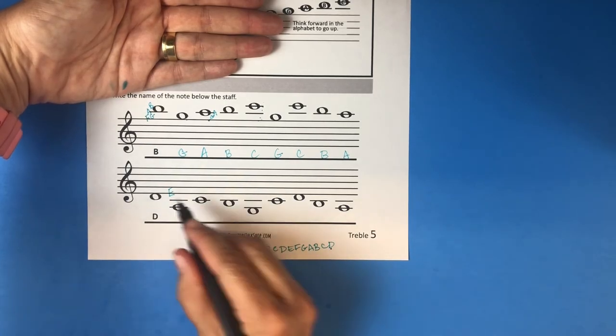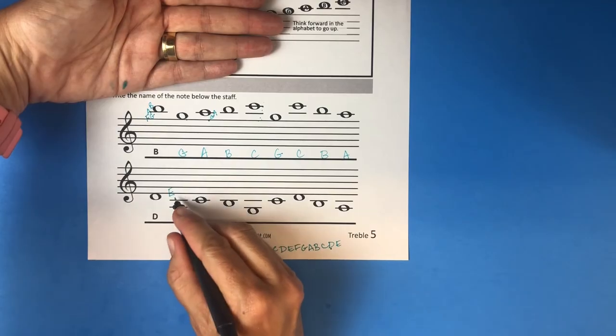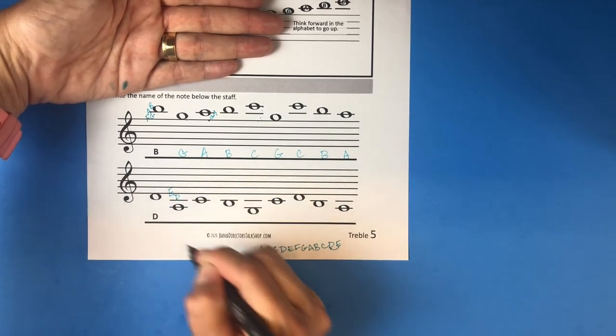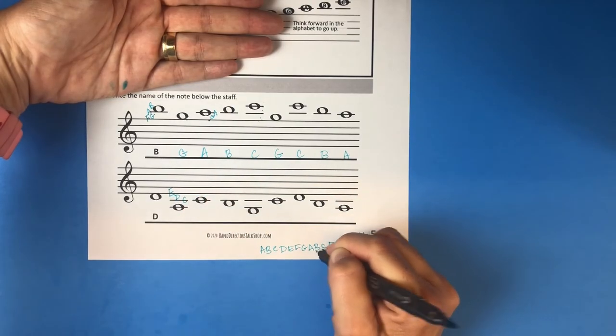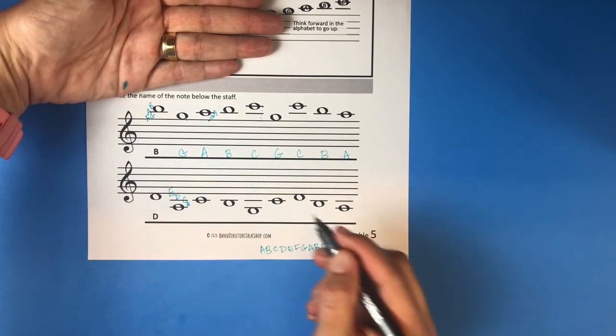I'm going to go backwards, so this right here would be D. Go backwards again, that line would be C. Go backwards again, the space would be B. Make sure you don't skip anything. And go backwards again, that line would be an A.